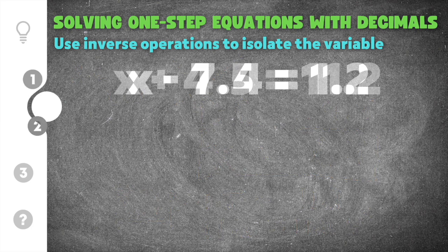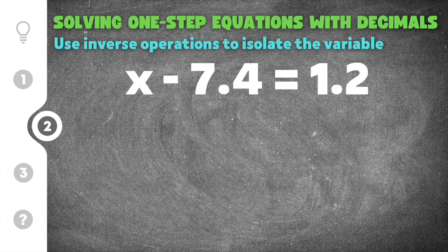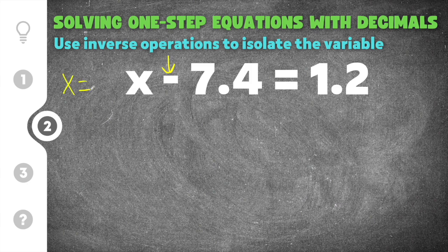Moving on to the second problem. This problem gives us x minus 7.4 equals 1.2. Now very similar to the first problem except this time we have a minus symbol in the middle. Now the opposite of minus is add. So we're trying to isolate x. We want x by itself. Remember we want x equals a number.